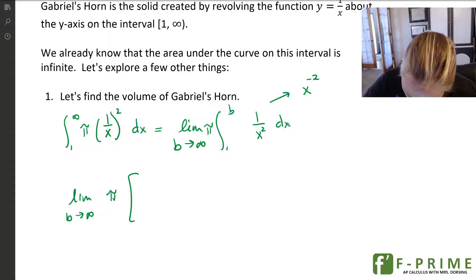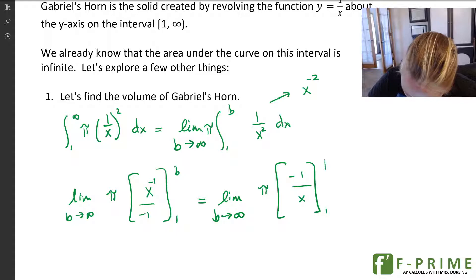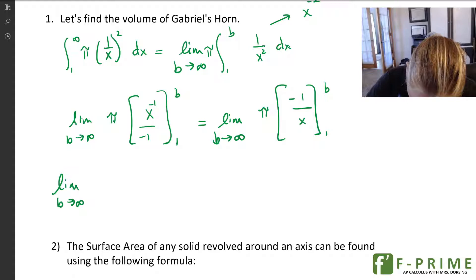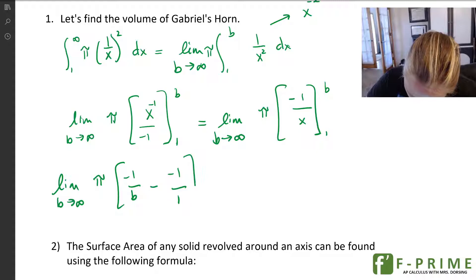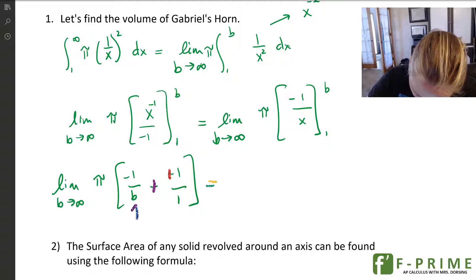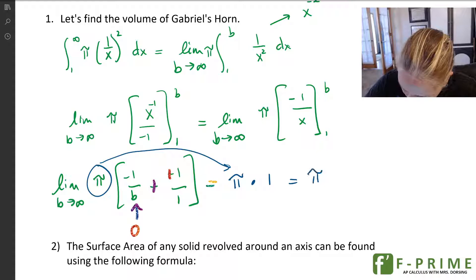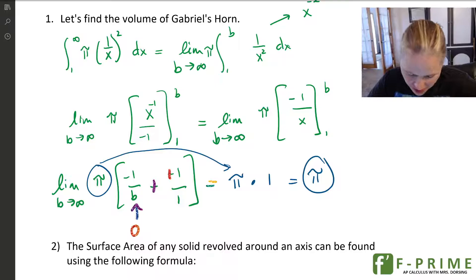So I end up getting the limit as b approaches infinity, I'll have π on the outside, x to the negative 1 divided by negative 1 from 1 to b. I'm going to move that negative exponent down here in just a moment. So I'll have negative 1 over x. Now I'm going to plug in my limits of integration. The limit as b approaches infinity, I'll have π, negative 1 over b minus negative 1 over 1. Minus and minus turns to a plus, and this goes to 0. So I'm going to have π times 1. Don't forget the π. So this integral converges to π. So the volume of Gabriel's horn is π. Pretty amazing, pretty cool.